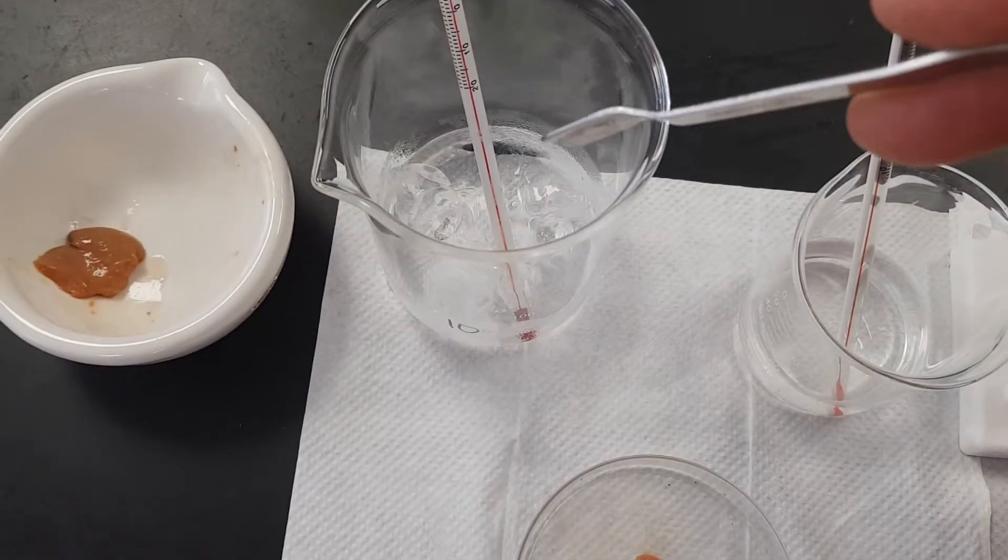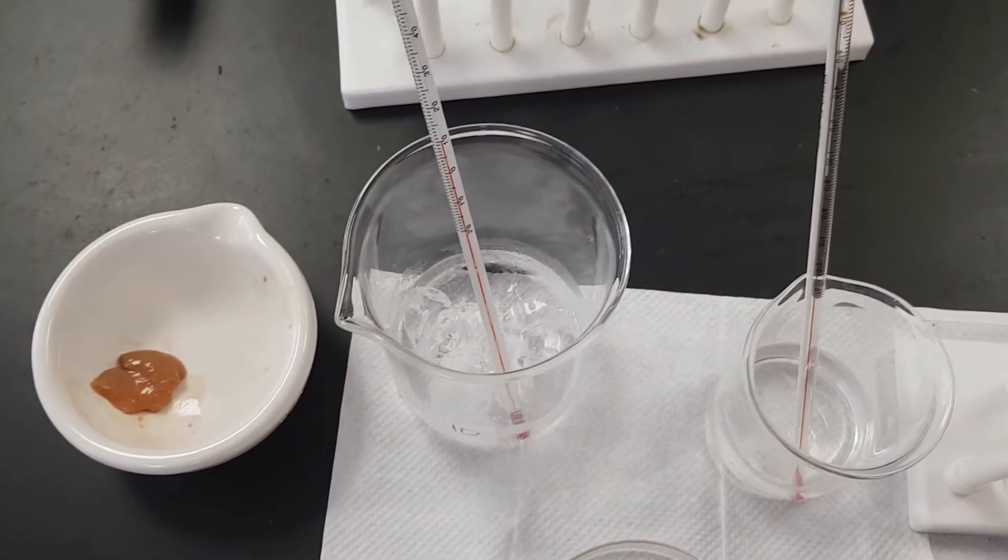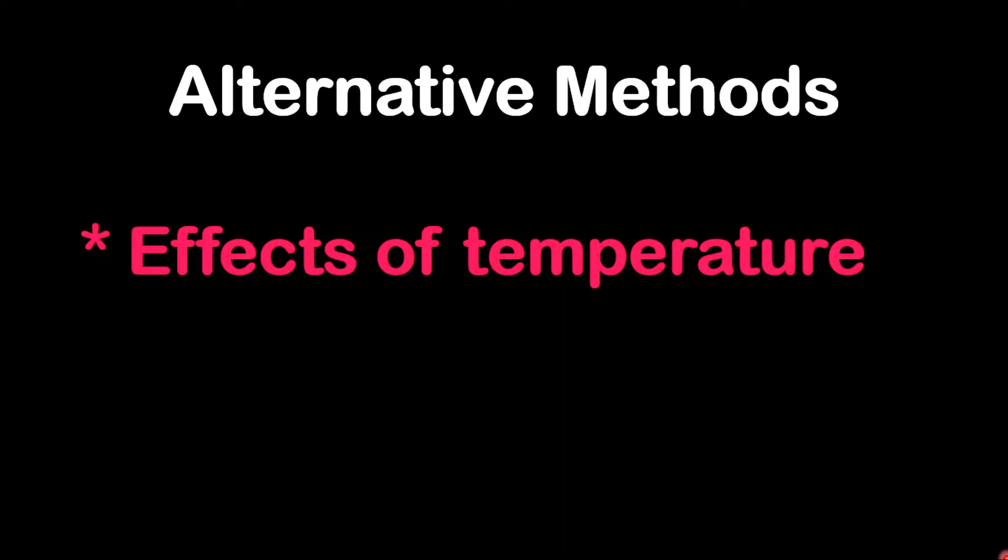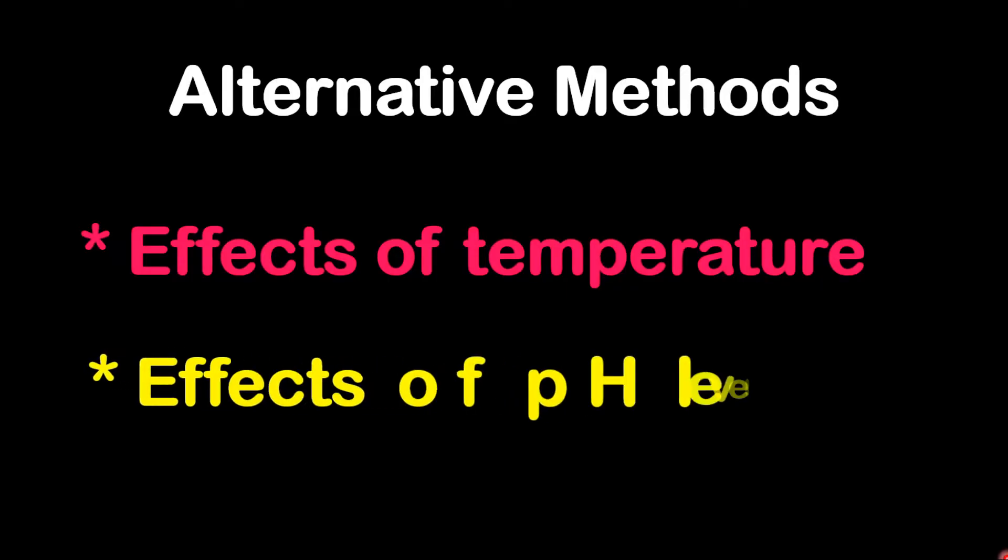We have an ice bath and we also have a temperature of that one. Alternative methods: we can look at the effects of temperature which we are going to do today, and we can modify the experiment to look at the effects of pH levels.